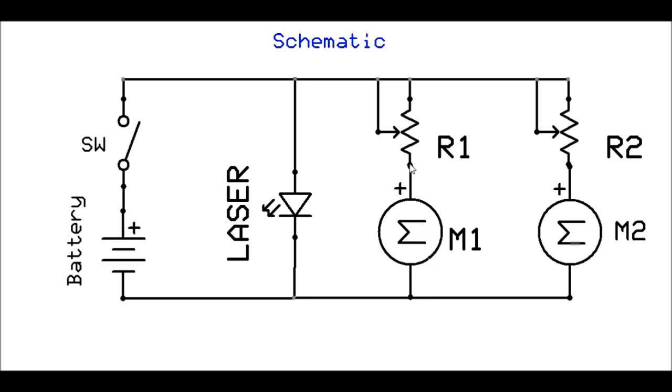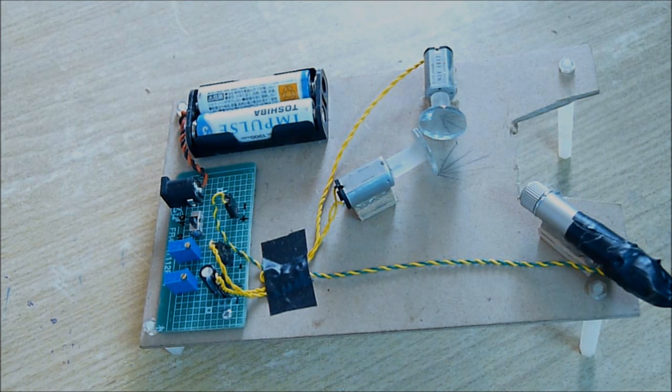Here's the very simple circuit. Motor one is connected with a potentiometer. Motor two also connected with a potentiometer in series. The laser is connected in parallel and a switch and a battery is connected with the circuit.